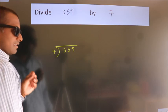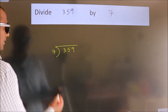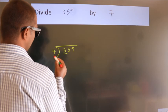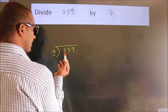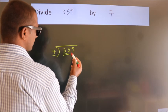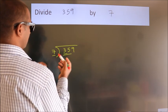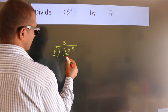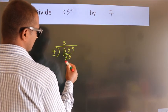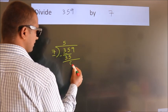This is your step 1. Next, here we have 3, here 7. 3 is smaller than 7, so we should take 2 numbers: 35. When do we get 35? In the 7 table. 7 fives, 35. Now we should subtract. We get 0.